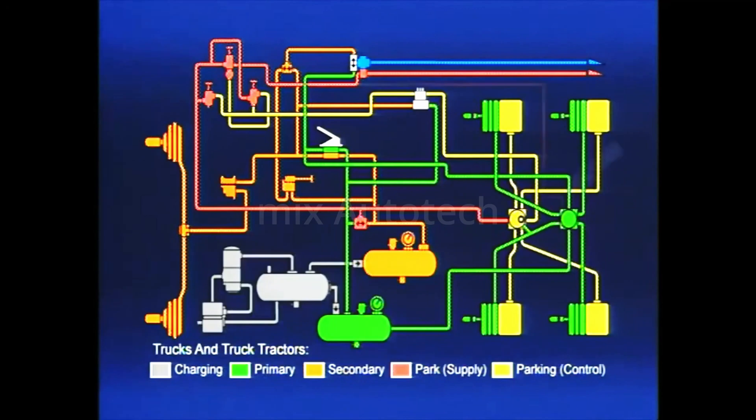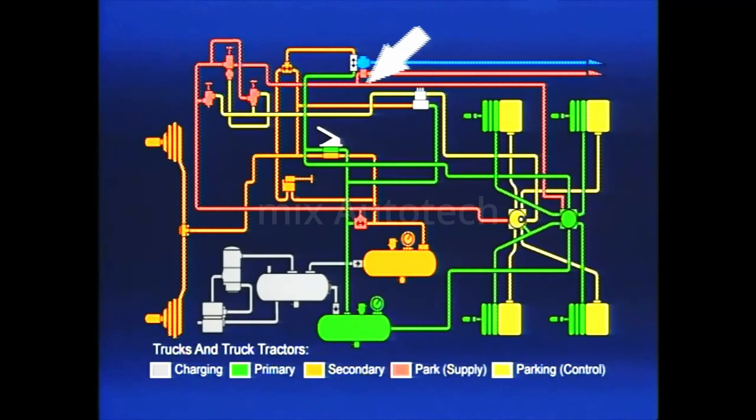With the exception of the additional proportioning valve control port, the BPR-1 air connections are exactly the same as the R-12 relay it replaces. This port is connected to the airline running between the PP-7 trailer supply valve and TP-3 tractor protection valve.